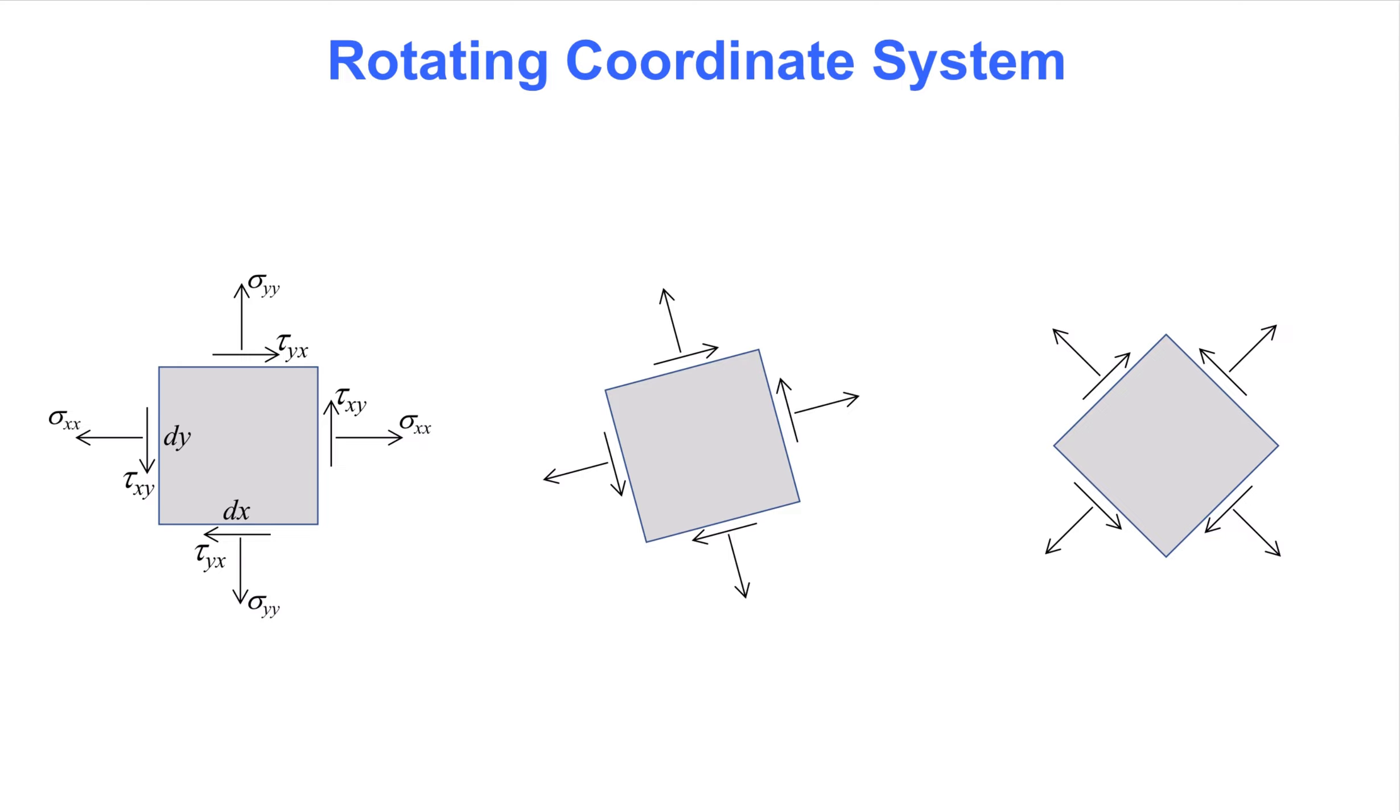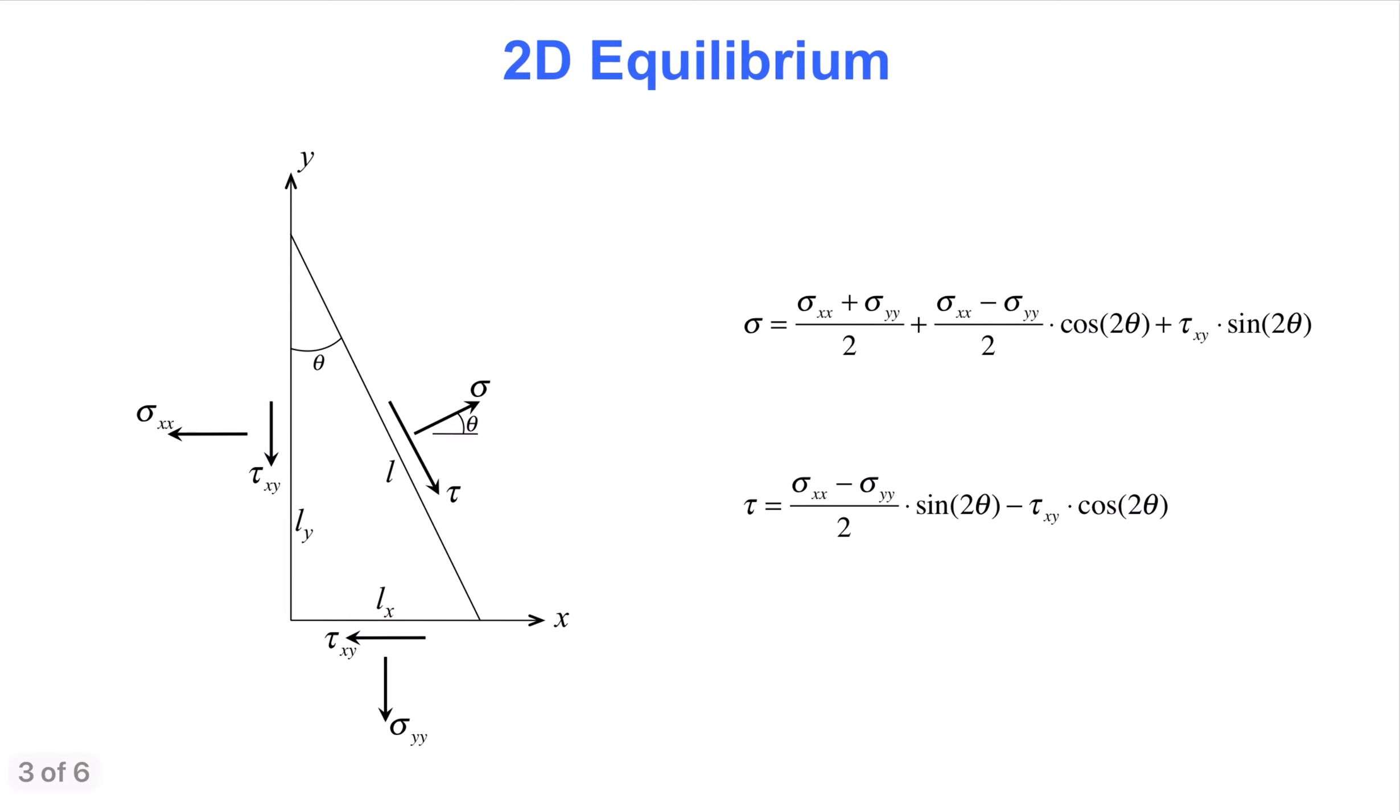Next, consider the equilibrium of an inclined surface cut through the material. By setting up the equations for equilibrium in the horizontal and vertical directions, as is done in the detailed notes available at Tyria's toolbox, these two equations are obtained.